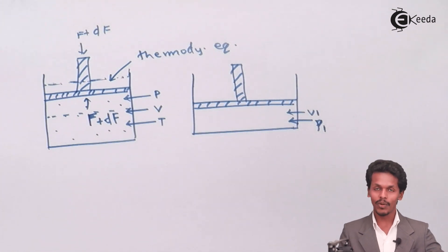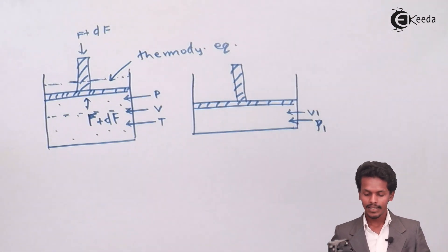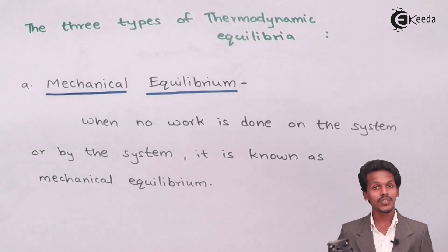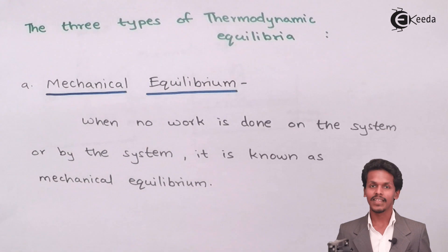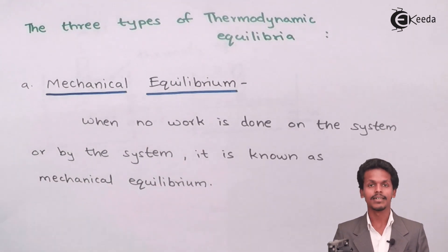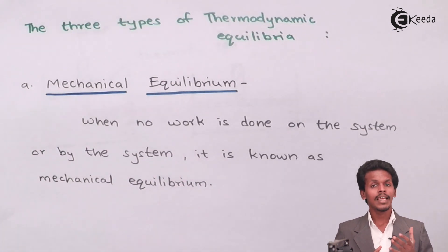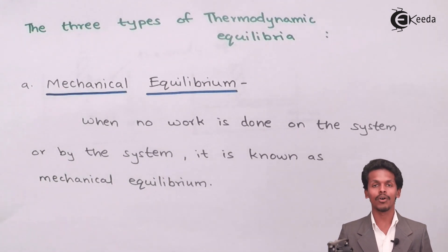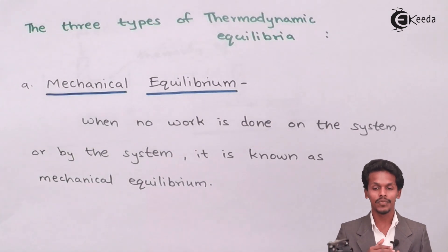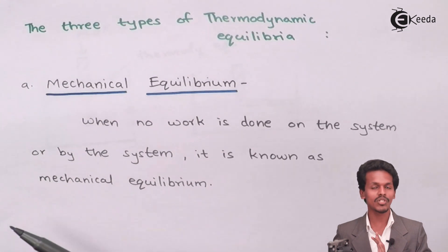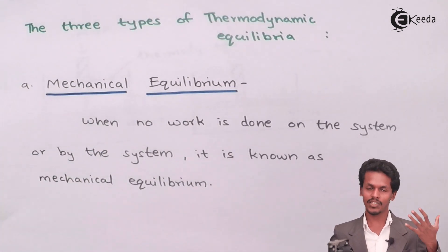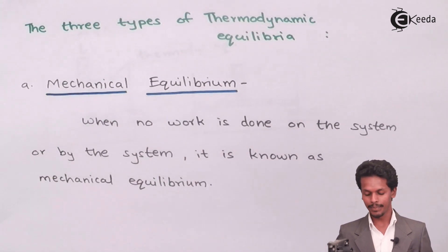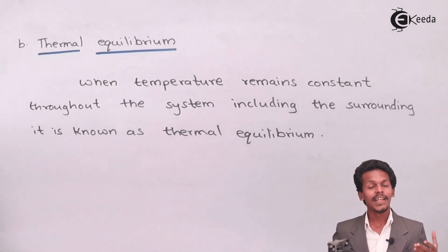There are three types of thermodynamic equilibrium. The first is mechanical equilibrium — when no work is done on the system or by the system, it is known as mechanical equilibrium. Considering our piston example, if no variable is changed, the piston won't move and no work is done. That kind of equilibrium is mechanical equilibrium.